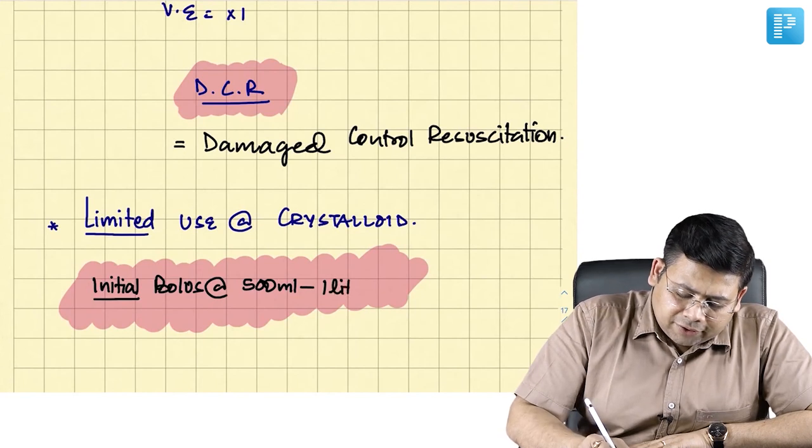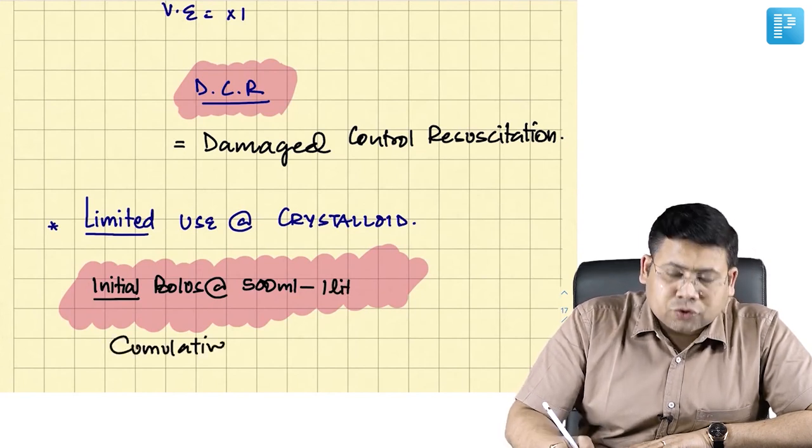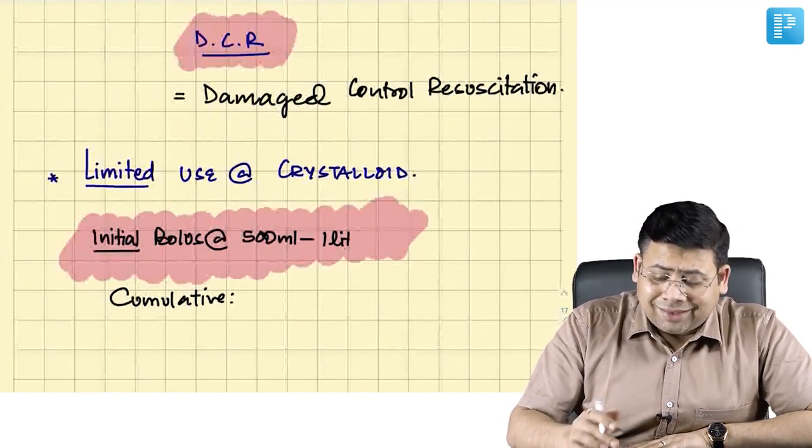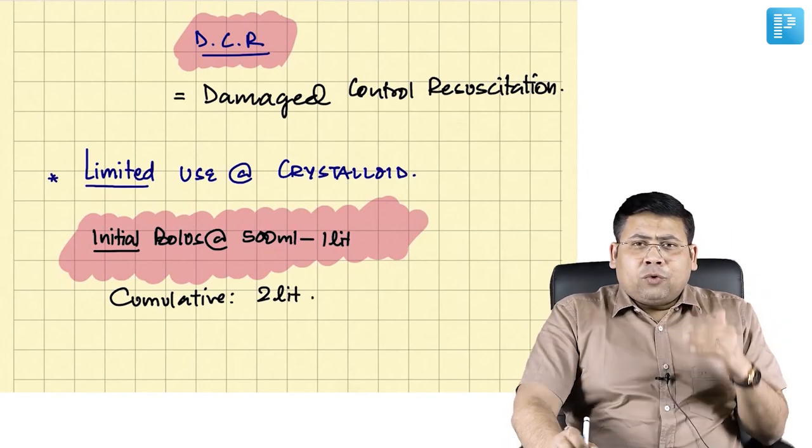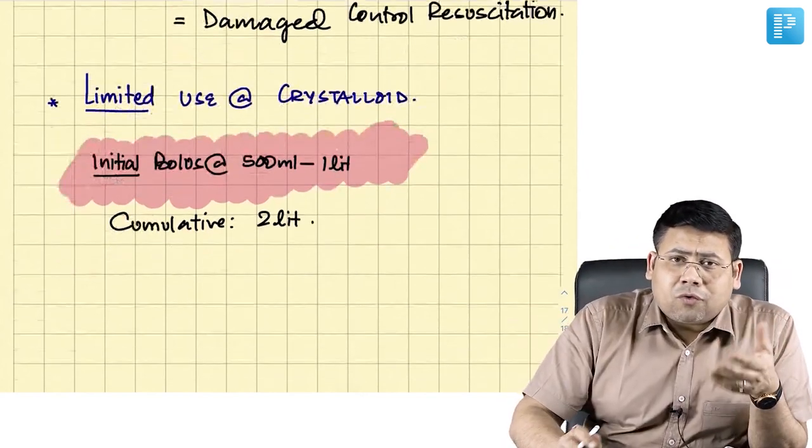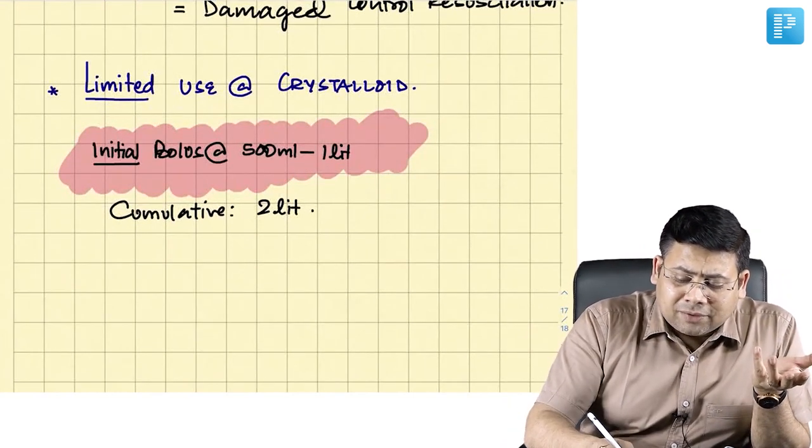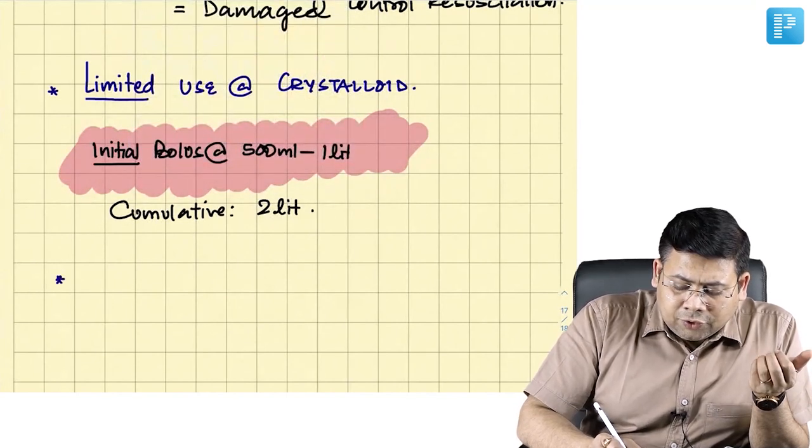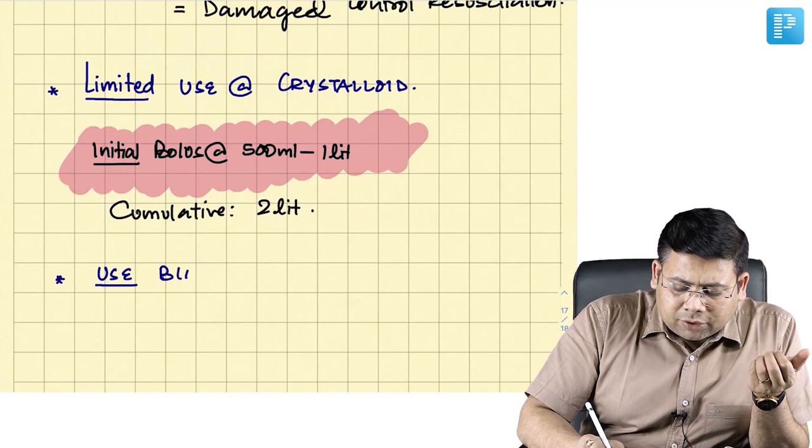Cumulative, you should not give more than 2 liters. If you think you require to support volume more than this, use instead of this blood. So second is use blood and blood products.